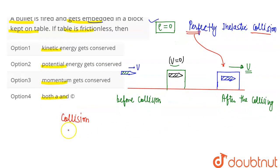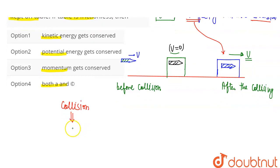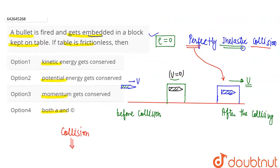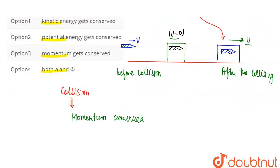Momentum is always conserved — whether it is a perfectly elastic collision, perfectly inelastic collision, or an inelastic collision. In any type of collision, momentum is always conserved. In the case of a perfectly inelastic collision, only momentum is conserved.